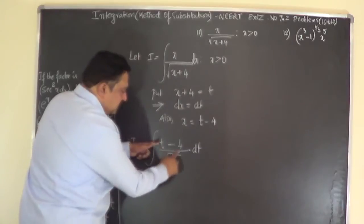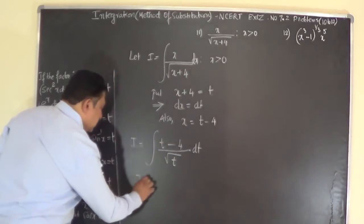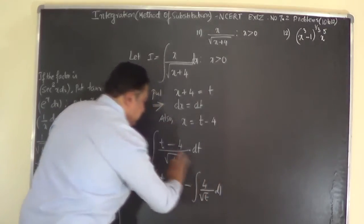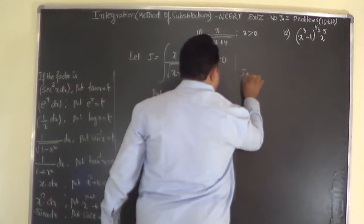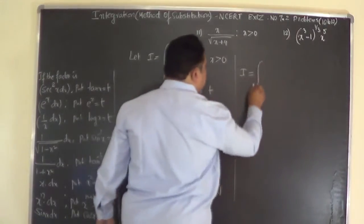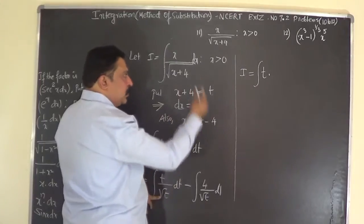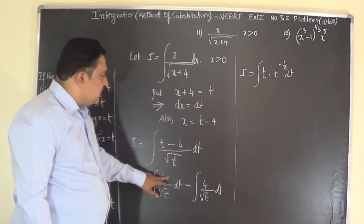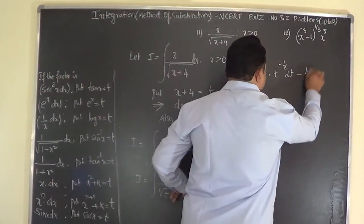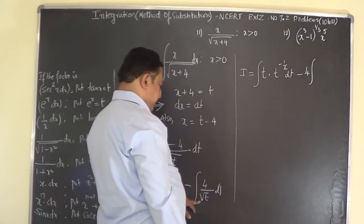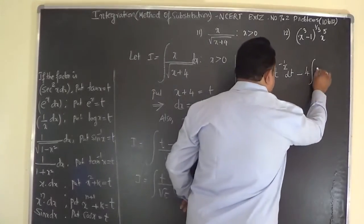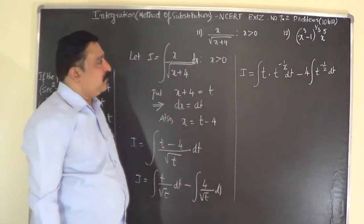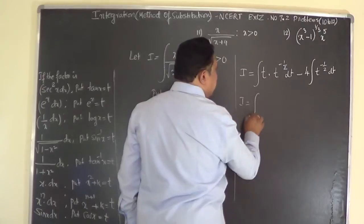Separating: I equals integral of t over √t dt minus integral of 4 over √t dt. Now t over √t equals t to the power of 1 times t to the power of minus half, which is t to the power of half. And 1 over √t is t to the power of minus half.